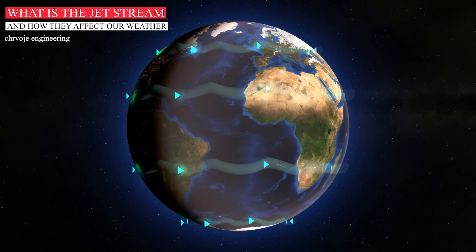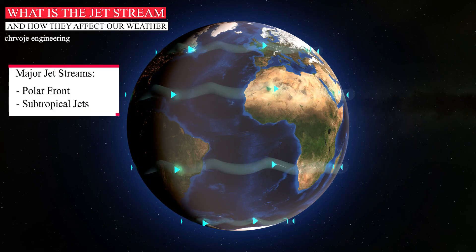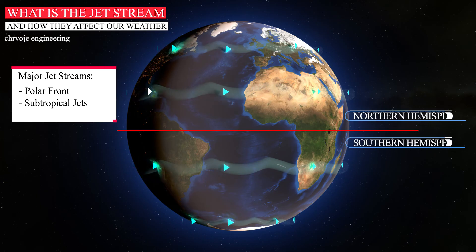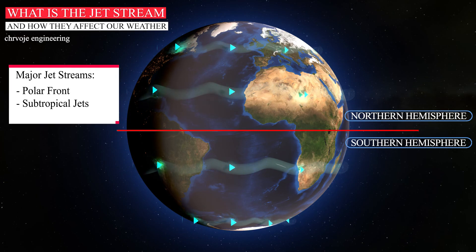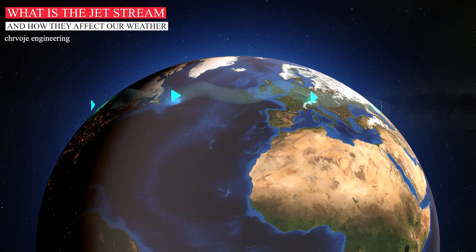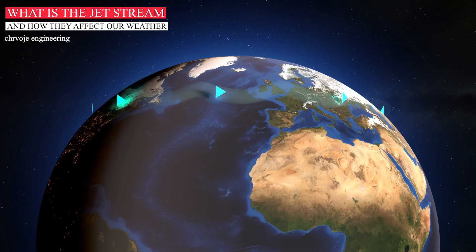The polar front and subtropical jets are the two primary jet streams. These jets may be seen in both the northern and southern hemispheres and they are part of the wider global circulation. The polar front jet occurs over mid-latitudes and strongly influences the weather over Europe.